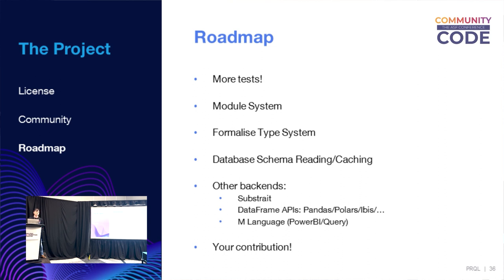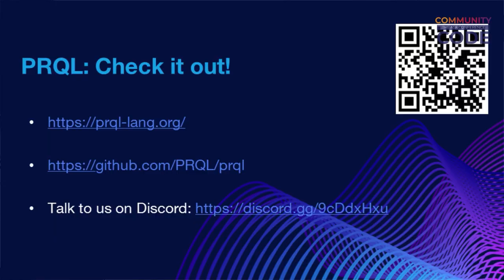In terms of our roadmap: we're going to work on building more tests — tests are paramount. The module system is basic and experimental at the moment. We're formalizing the type system and have already started discussions, meeting with some people next week to discuss further. The database schema access is something the compiler could do a lot more with, and we're working on a caching mechanism like header files. We're also looking at supporting other backends — pandas, polars, or IBIS backends would be quite trivial to implement; we just haven't had the time. And obviously, we're looking forward to your contributions — it's open source, just submit a PR. We have a very friendly community. Come and check it out, talk to us on Discord or GitHub. Thank you.